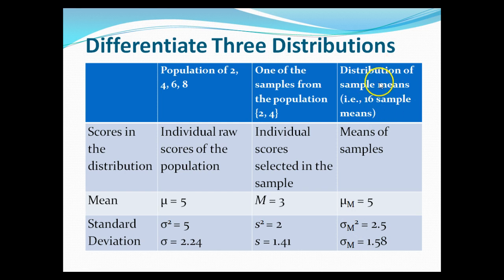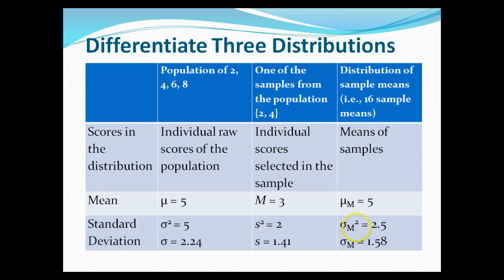Looking at the distribution of sample means: we take 16 different samples from the population of 2, 4, 6, 8. The mean of the sample means — μ sub m — equals 5. The variance of the sampling distribution — σ sub m squared — equals 2.5, and the standard error (σ sub m, unsquared) equals 1.58. You can see these different estimations of values that are supposed to correspond to the true parameter.